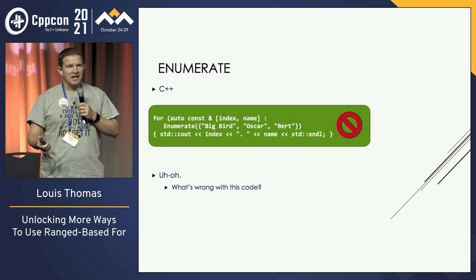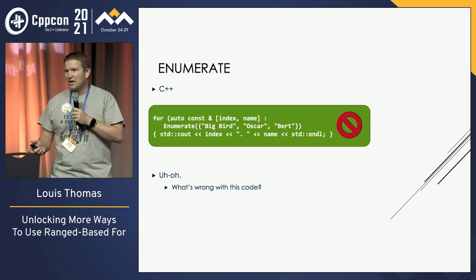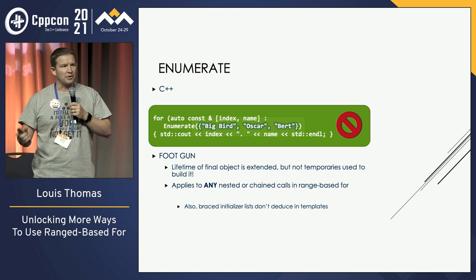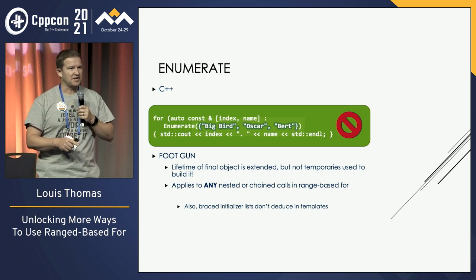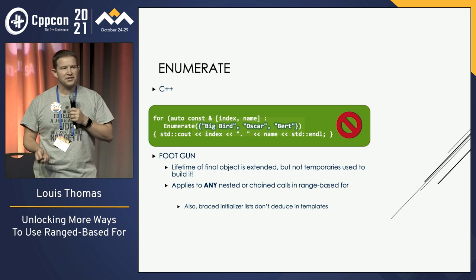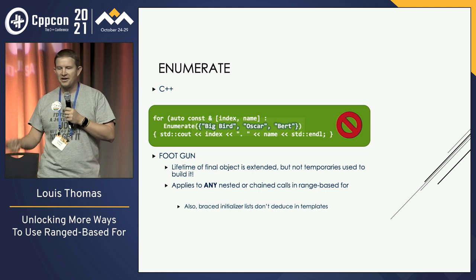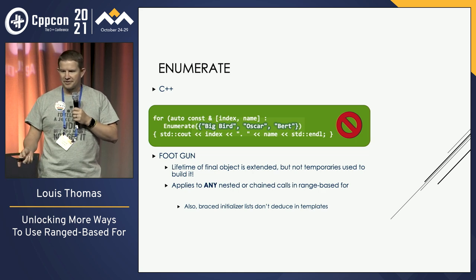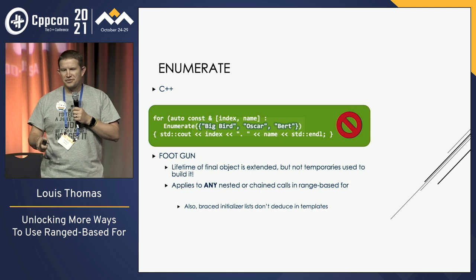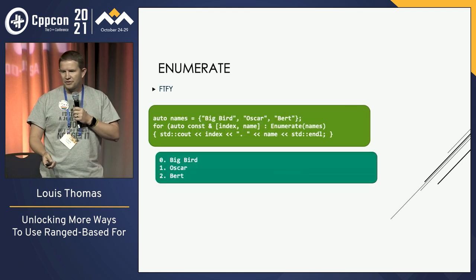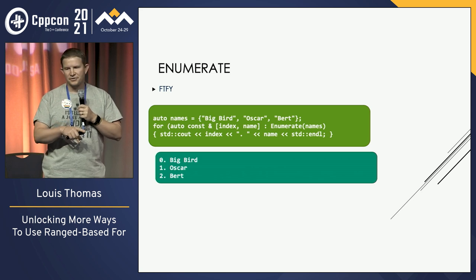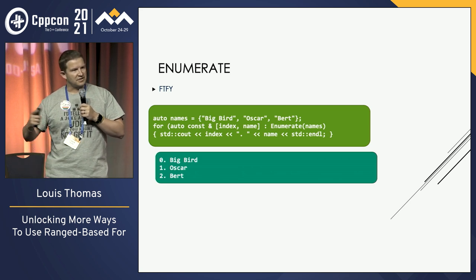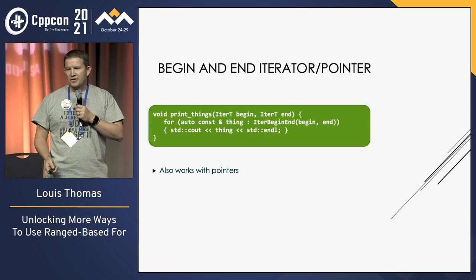So we run it, and well, it almost worked. The problem is we have a great little foot gun here: RangeBase 4 will preserve the lifetime of the thing directly passed into it, but any temporaries used during construction — whether passed in or chained together — will be lost before we actually start iterating. So we'll lose our list before we start iterating. Also, brace initializers can't be type-deduced in a template, but we can fix that. If we pull the initializer list out — which is what you usually see, since you're usually not iterating over a list immediately but something that was passed in — it works great.